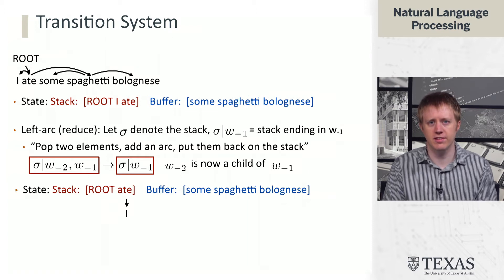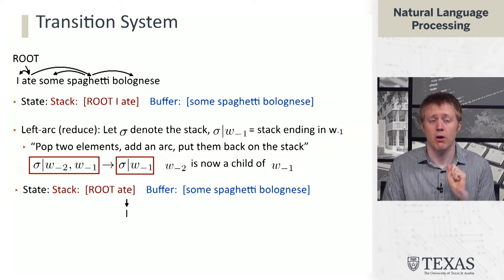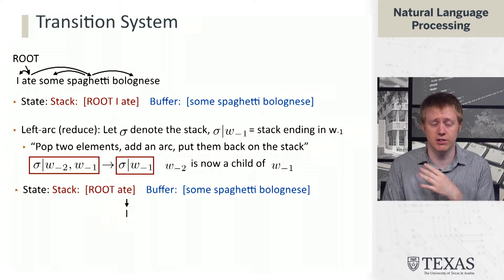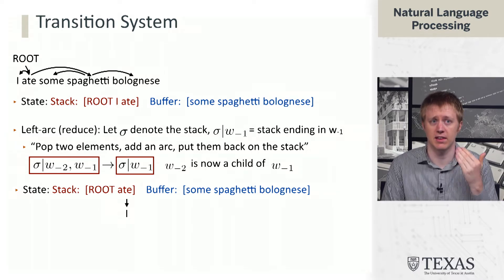This is a way of building up the tree. What we're doing right now is an 'oracle derivation' — we are talking about what are the correct operations to do at each step. Our transition system will generally allow us to do all kinds of things and build all sorts of trees, but we're doing a walkthrough of how we get the correct tree, and then we'll revisit the idea of how to get the tree that we actually want.